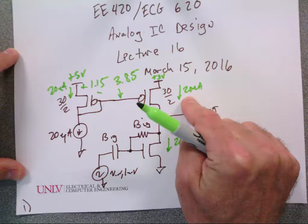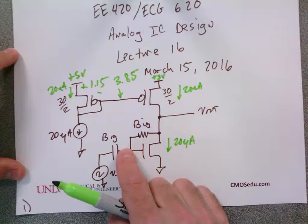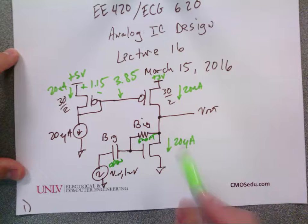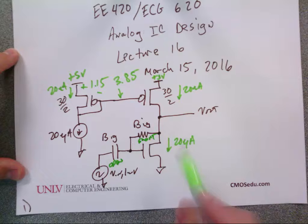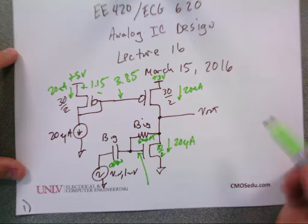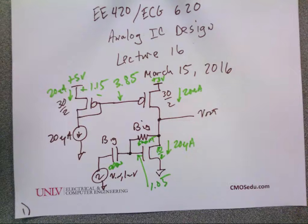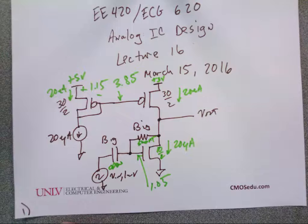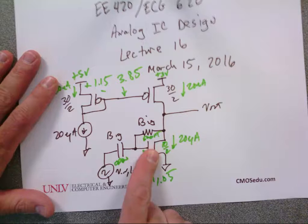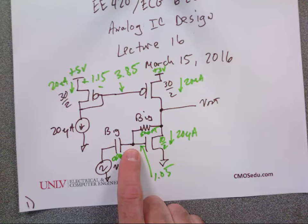Where does the 20 microamps flow here? It doesn't have any place to flow, so this voltage starts to go up until this transistor turns on and sinks the precise amount. For DC, this is an open and this is a short. Why is that a short? There's no place for the current to flow — it's gate-drain connected. So what's the voltage here? 10 by 2, 20 microamps — the voltage has to satisfy table 9.1. Can a DC current flow through the big resistor and charge that node? Yes.